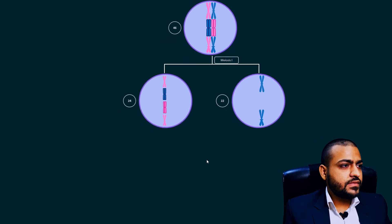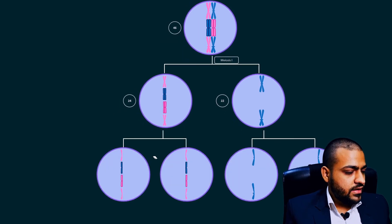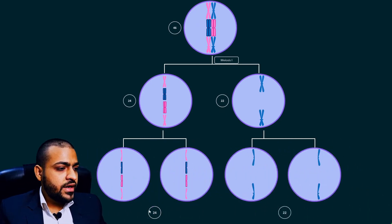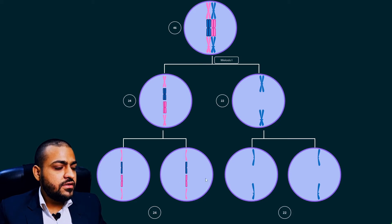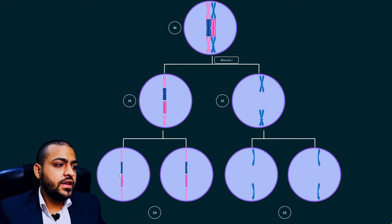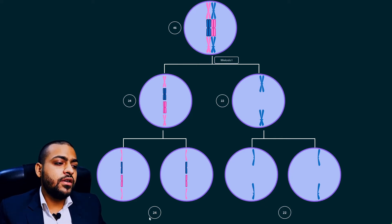Meiosis two then goes on normally, but the damage has already been done. All four gametes formed are now faulty — two gametes have an extra chromosome while the other two gametes have one less chromosome than normal.